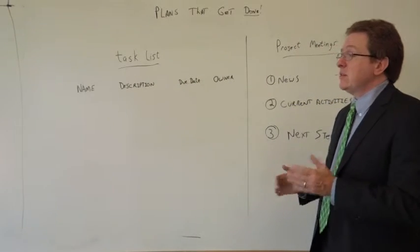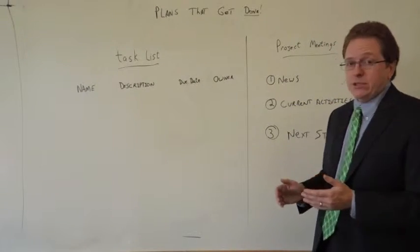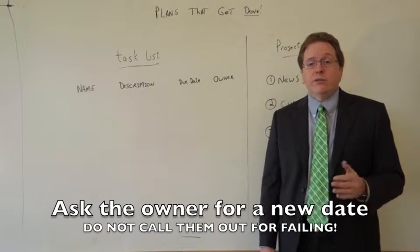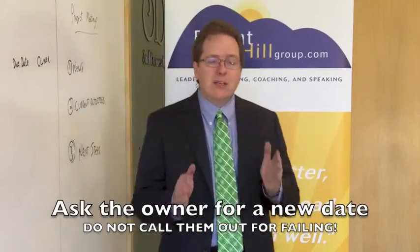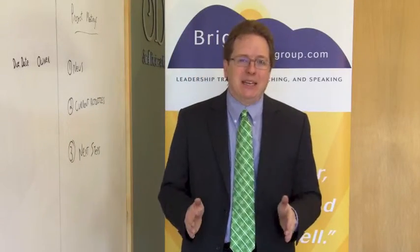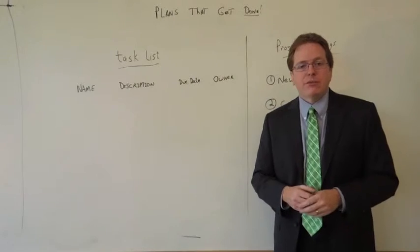Now what's going to happen? Some of the items aren't going to happen as they were originally scheduled. Just ask the task owner for a new date. Don't call them out publicly for failing to keep their commitment. The place to do that is outside the meeting. So all you do is just say, when is number seven going to get done?